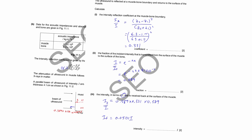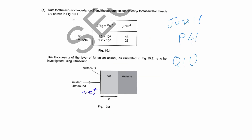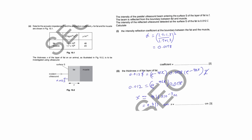They give you again the values for Z and absorption coefficient for fat and muscle. The thickness X of the layer of fat of an animal is given as X only — unknown, to be found later. The intensity coming in at the surface of the layer of fat is I. The beam is reflected from the boundary between fat and muscle, and how much is detected back at the surface of the fat is 0.012I. That means I comes in and 0.012I comes out.